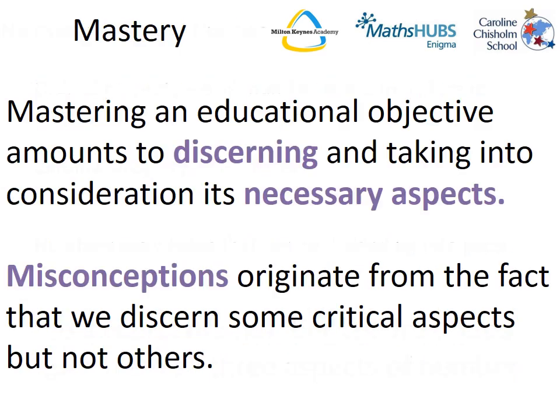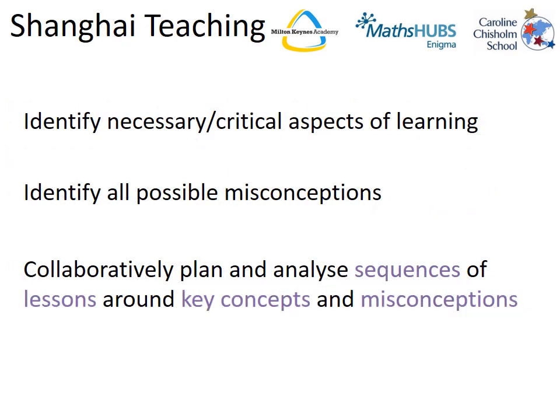The term mastery is used to describe a whole number of things. In this context, we're using mastery to describe mastering an educational objective and making sure that students are able to discern all the necessary aspects, and by doing so, we hope that misconceptions that originate from the fact that they discern some aspects but not others are able to be avoided. The basic planning model for Shanghai teaching, which all Shanghai teachers would be expected to follow, is they would need to identify the necessary aspects of learning, identify all possible misconceptions, and by use of collaborative planning, discuss these elements and make sure they were delivering sequences of lessons that focused on key concepts and addressing those misconceptions.